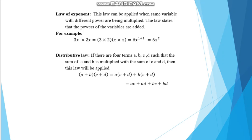The distributive law: if there are four terms a, b, c, d such that the sum of a and b is multiplied with the sum of c and d, then (a + b)(c + d) is expanded by taking each term from the first group and multiplying by the whole second expression. This gives: ac + ad + bc + bd.